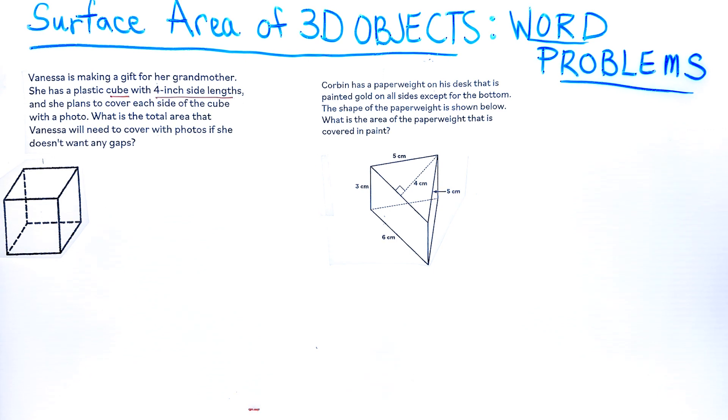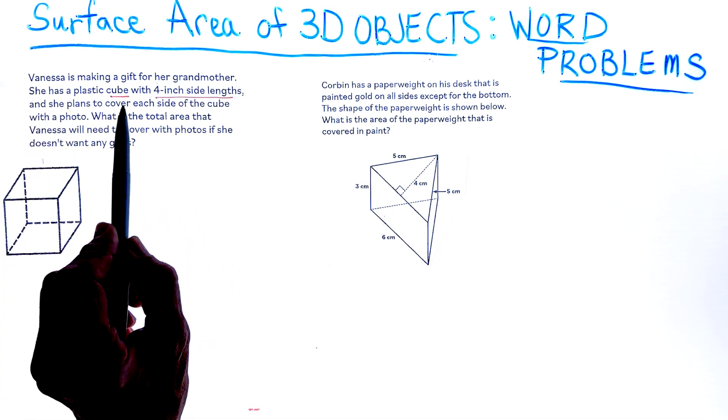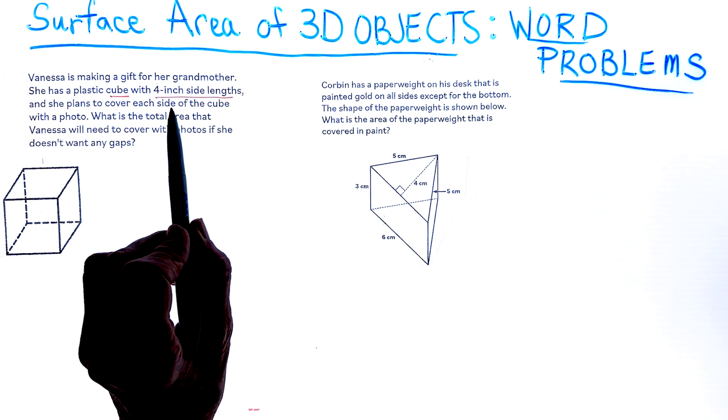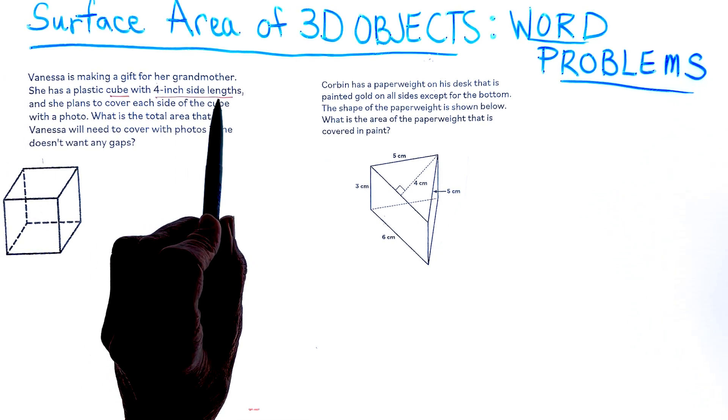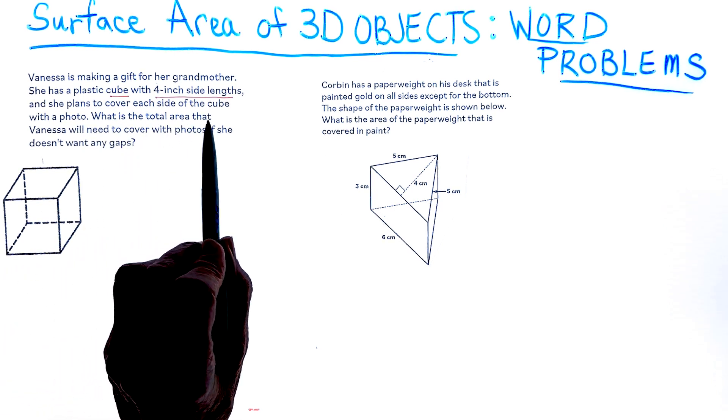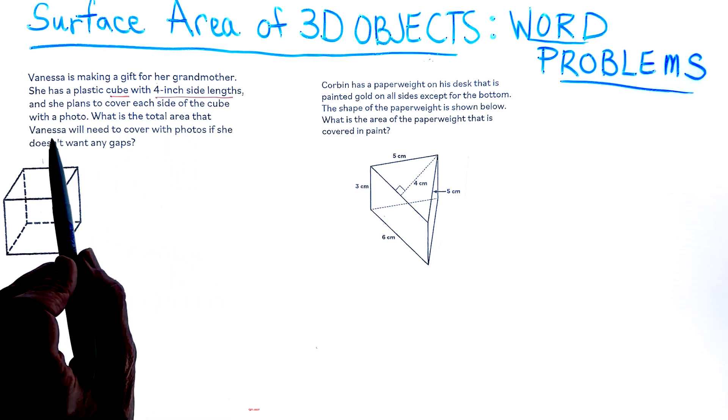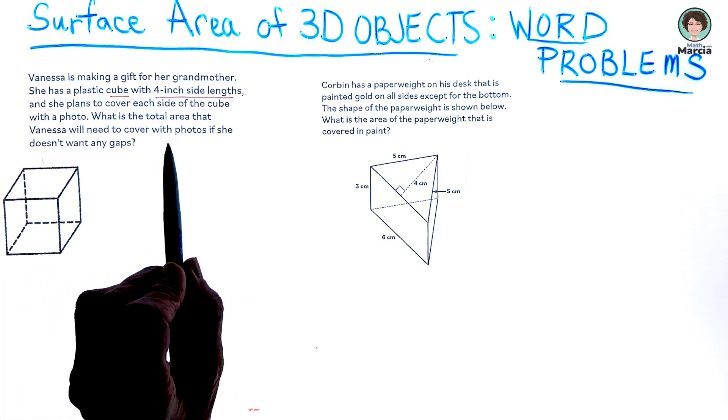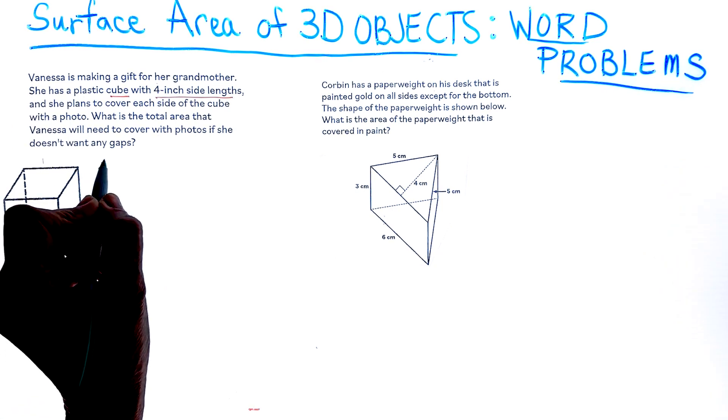Vanessa is making a gift for her grandmother. She has a plastic cube and the cube has dimensions of 4-inch side lengths. She plans to cover each side of the cube with a photo. What is the total area that Vanessa will need to cover with photos if she doesn't want any gaps? I see we have a cube.